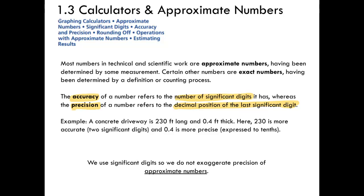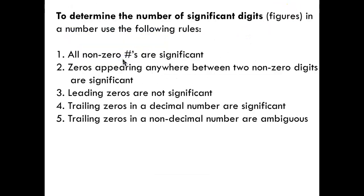0.4 is more precise — it's measured to the tenths place. With our measurements, what we're going to be working with primarily, so we don't exaggerate precision, is significant digits. That's what we're going to focus on. So this is our list of rules for determining if digits are significant or not.